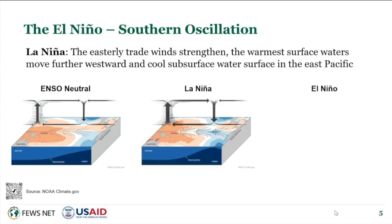With La Niña, that pattern is exaggerated. The cooler waters come up at an even greater rate, and you end up with a really significant area of cool ocean temperatures in the eastern Pacific and warm in the west. You can see on the diagram how the dark blue below the surface is much closer to the surface, representing that greater flow of cold water.